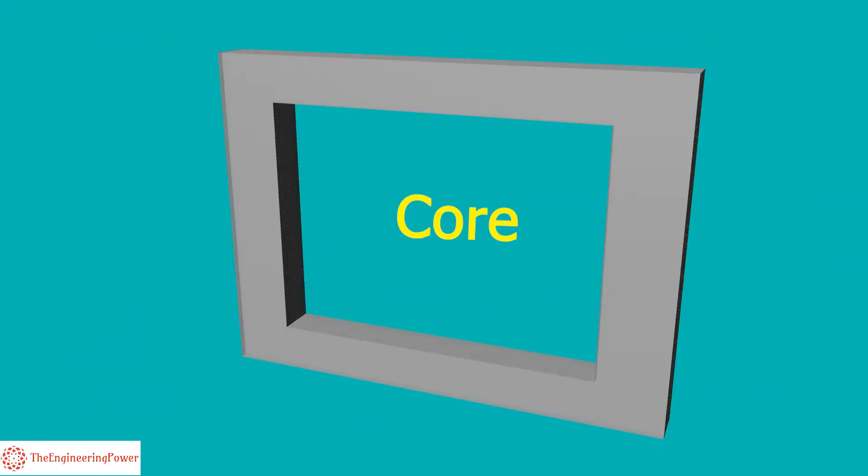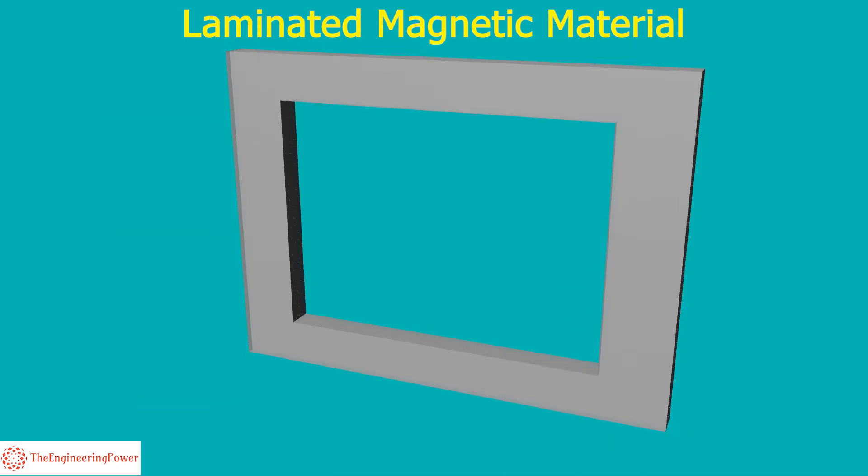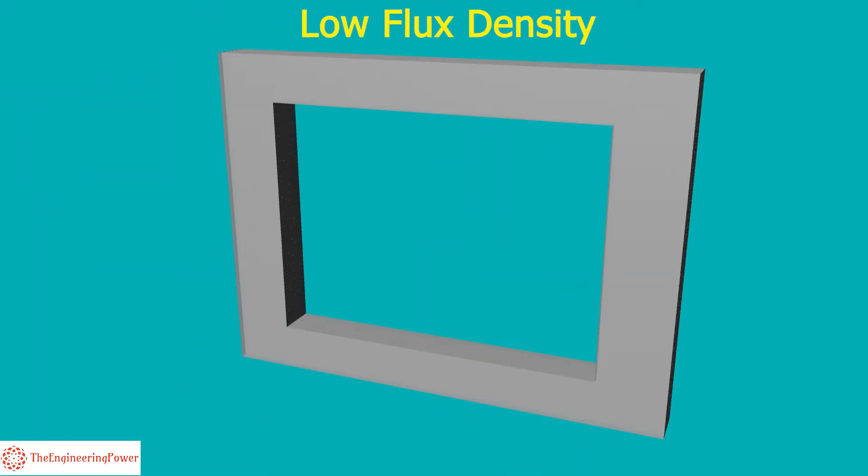Core is an important part of a PT. The core is built up of sheets of laminated magnetic material such as iron or steel operating at low flux density so that magnetizing current is small.